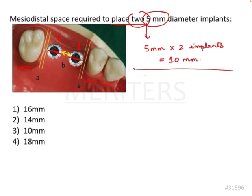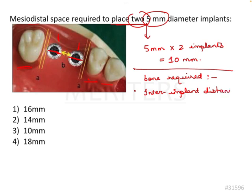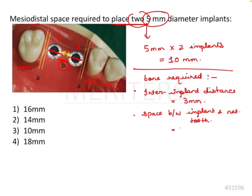Apart from that, how much bone do we need mesiodistally? Two things to remember: the inter-implant distance must be 3mm minimum. And the space between an implant and a natural tooth must be minimum 1 to 1.5mm. So between the tooth and the implant you should have around 1.5mm of space.